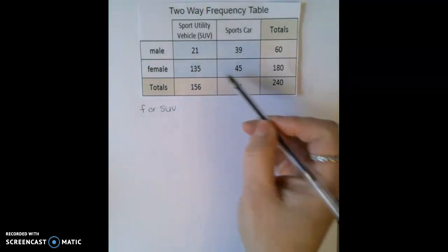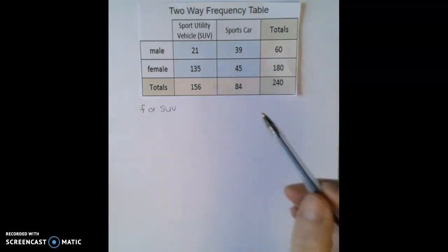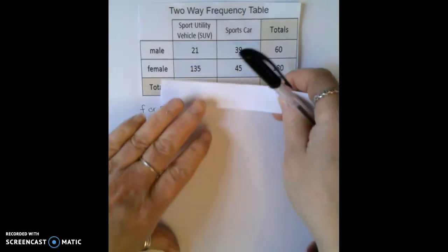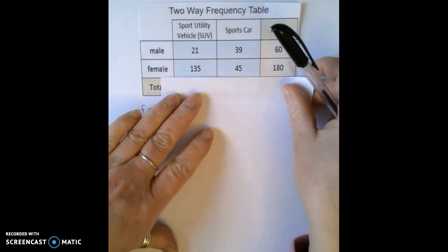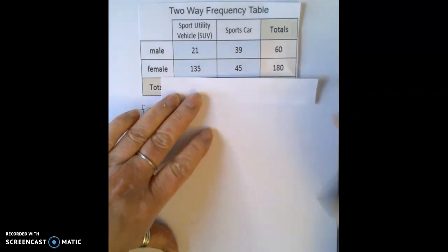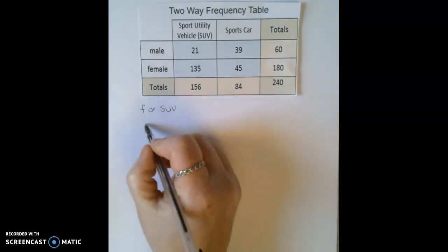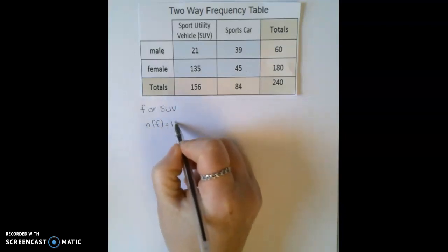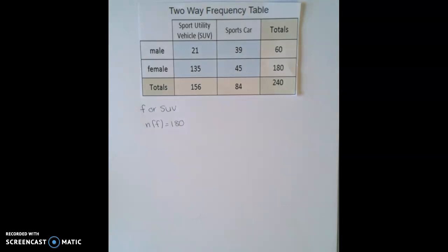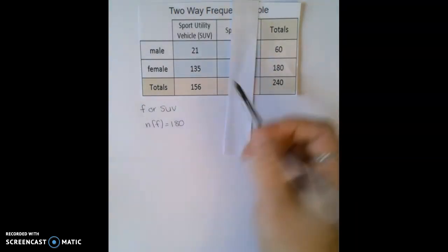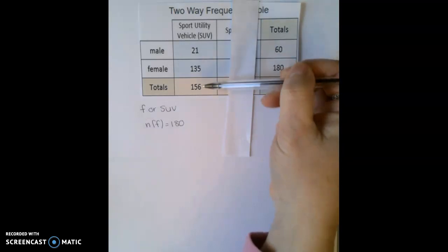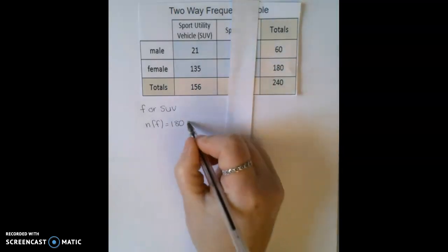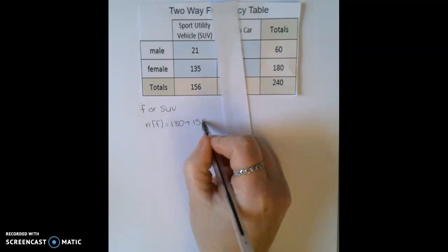So the total number of females is this row here. So we know that the total number of females is 180. And the total number of people who like the SUVs is this column here. So that's 156.